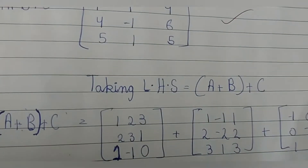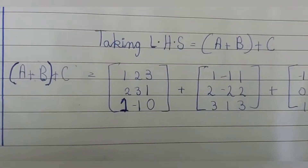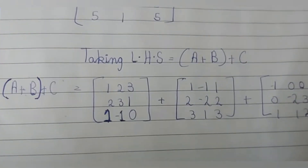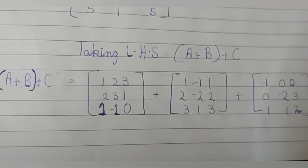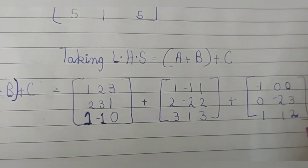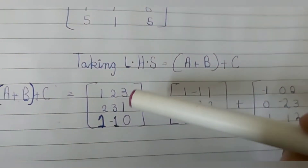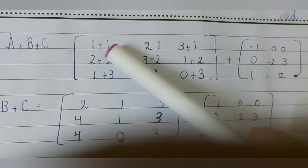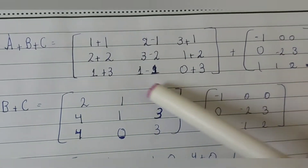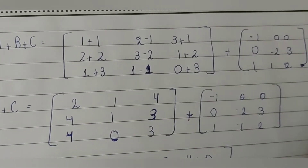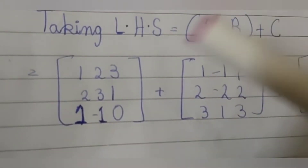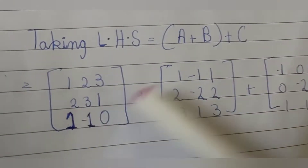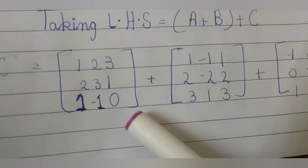Now we solve the left hand side: (a plus b) plus c. A value: 1, 2, 3, 2, 3, 1, 1, minus 1, 0. B value: 1, minus 1, 1, 2, minus 2, 2, 3, 1, 3. C value: minus 1, 0, 0, 0, minus 2, 3, 1, 1, 2. Solving the bracket a plus b: 1 plus 1 equals 2, 2 plus minus 1 equals 1, 3 plus 1 equals 4, 2 plus 2 equals 4, 3 minus 2 equals 1, 1 plus 2 equals 3, 1 plus 3 equals 4, minus 1 plus 1 equals 0, 0 plus 3 equals 3.